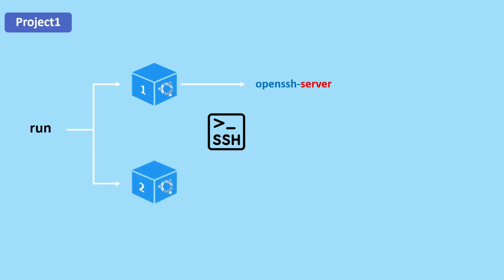Next we will run a second container, container two, and do the same SSH configurations, but this time we will install the SSH client package because it allows the container to act as an SSH client and initiate outgoing SSH connections. The package includes the necessary components for connecting to an SSH server. We also need to set a new password for the root user inside the first container.